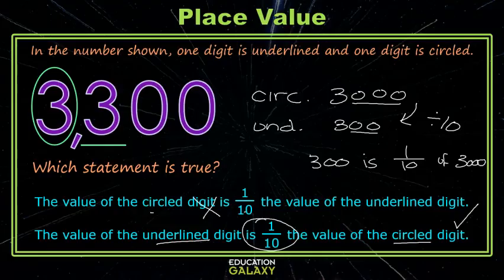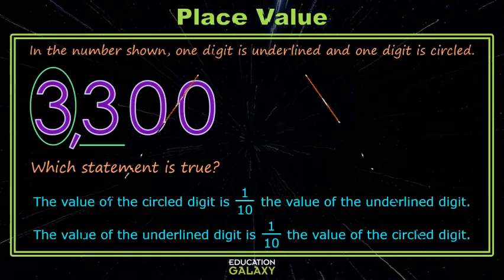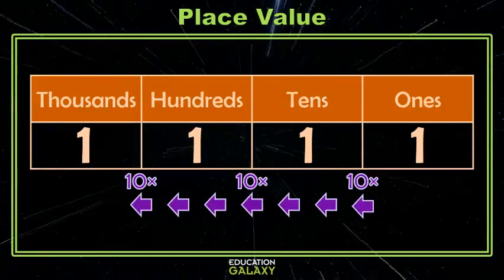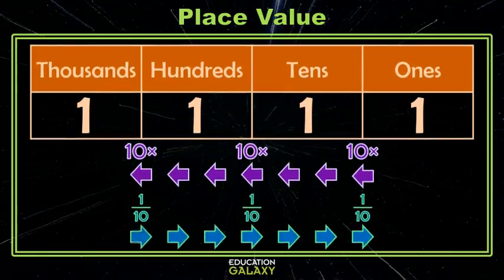So, in summary, as we move to the left on our place value chart, each place value position is 10 times the position on its right. As I move to the right on the place value chart, each place value position is one-tenth the place value position to its left.